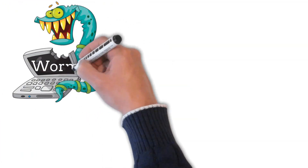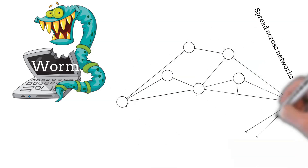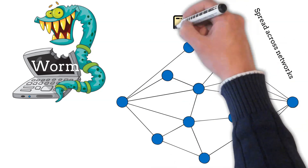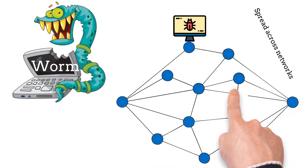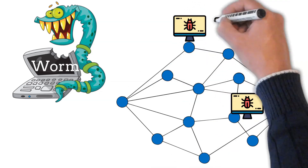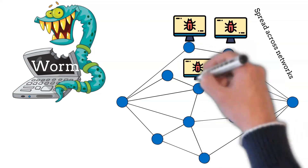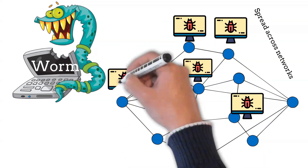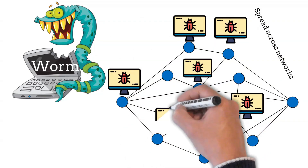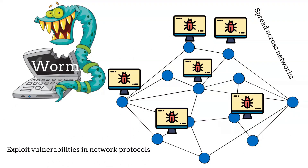Worms are standalone malware programs that can replicate themselves and spread across networks without needing to attach to other programs. They often exploit vulnerabilities in network protocols to propagate rapidly.